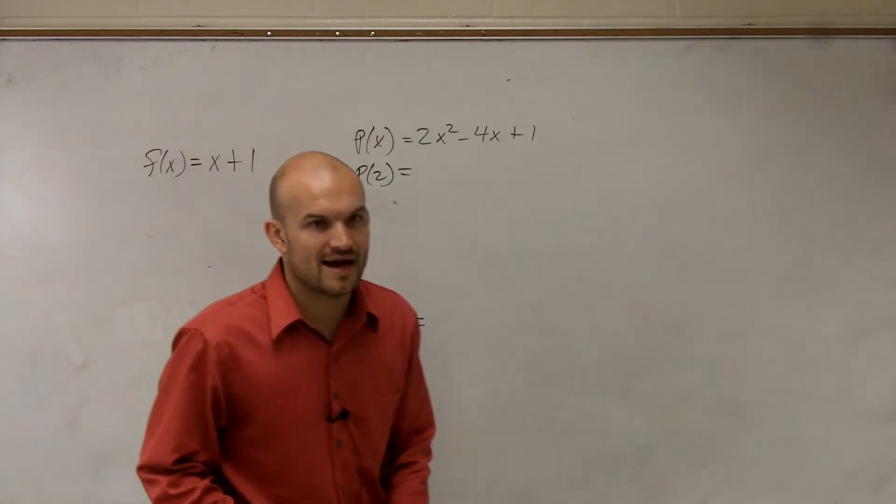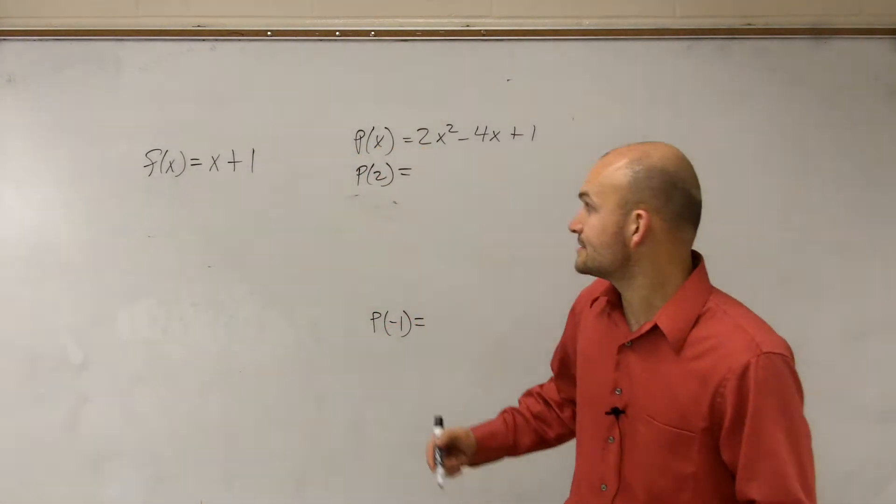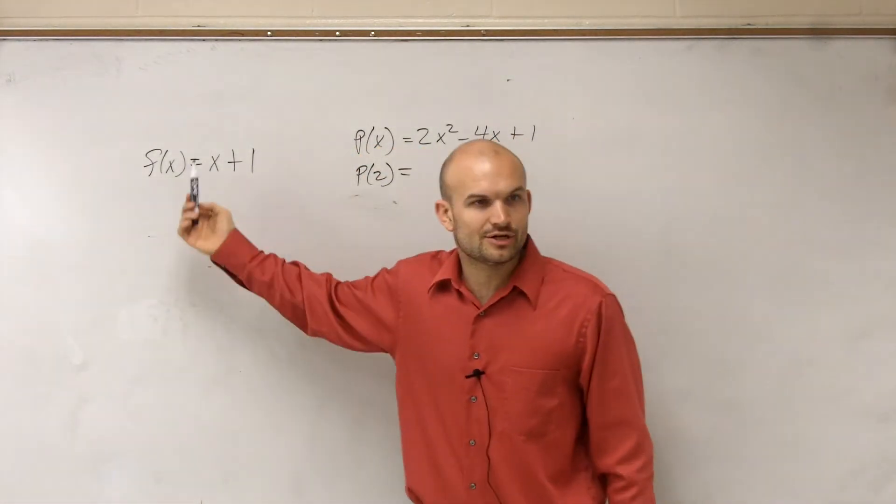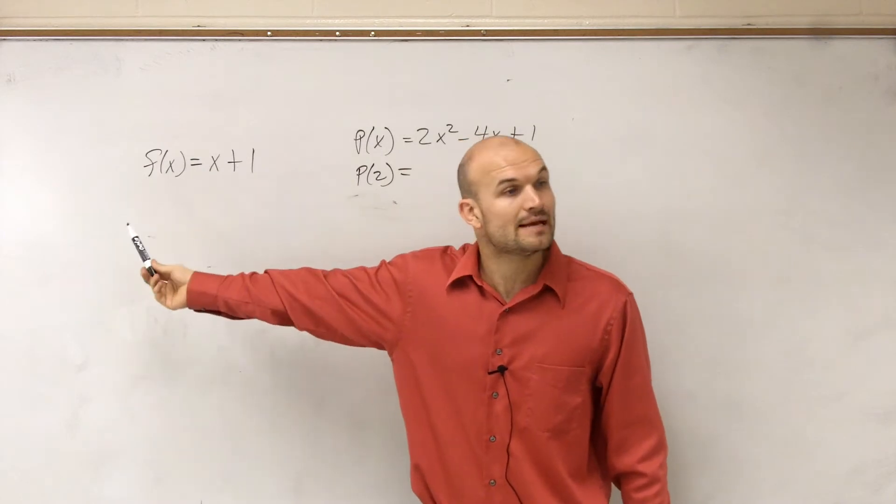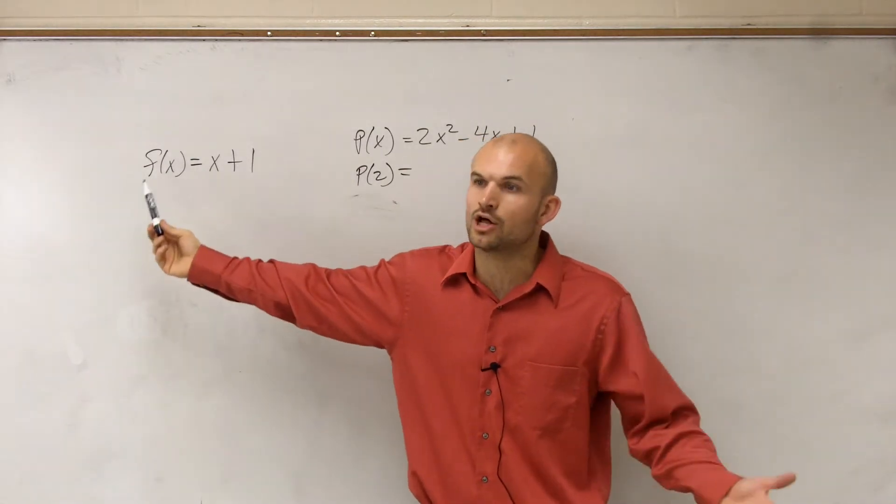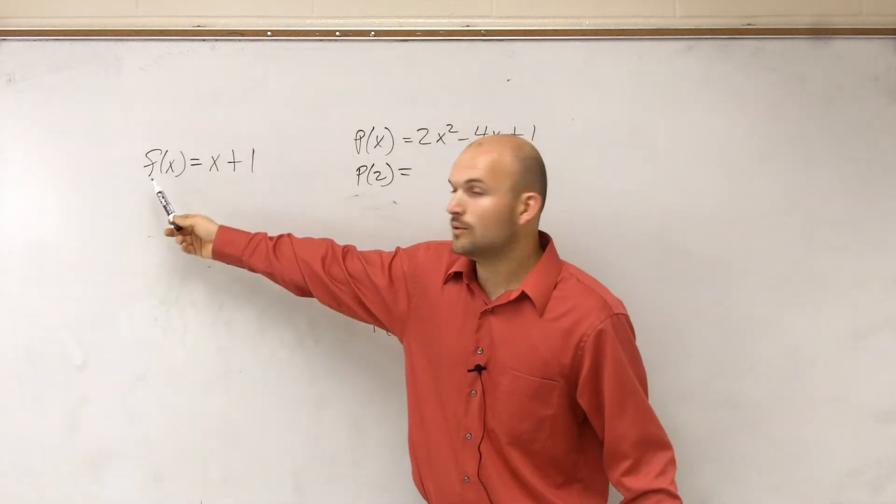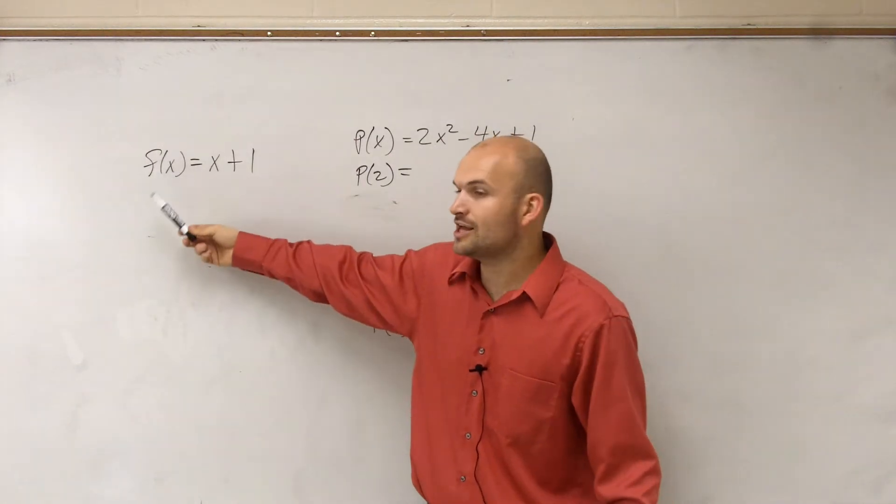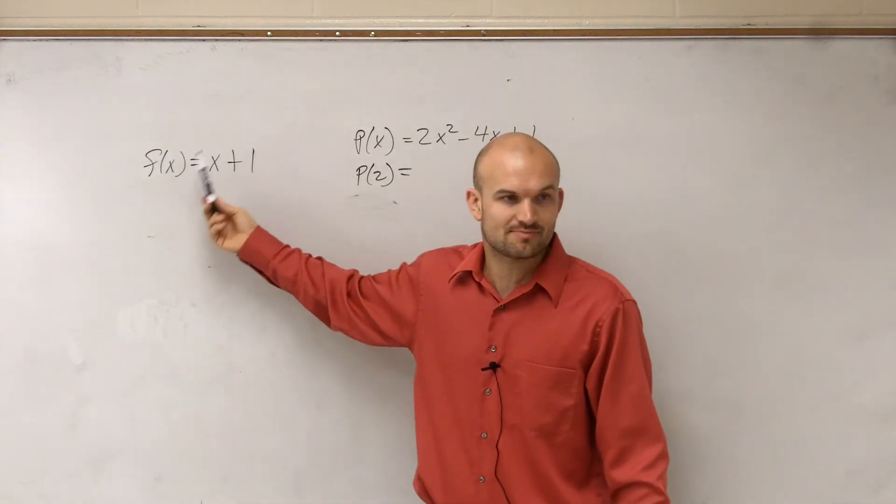When dealing with f of x, all we're simply asking is, f of x, that's going to be your name of your function. F is going to be the name of the function, and x is going to be what we call our input value. So f of x, when evaluated for x, is going to be x plus 1.